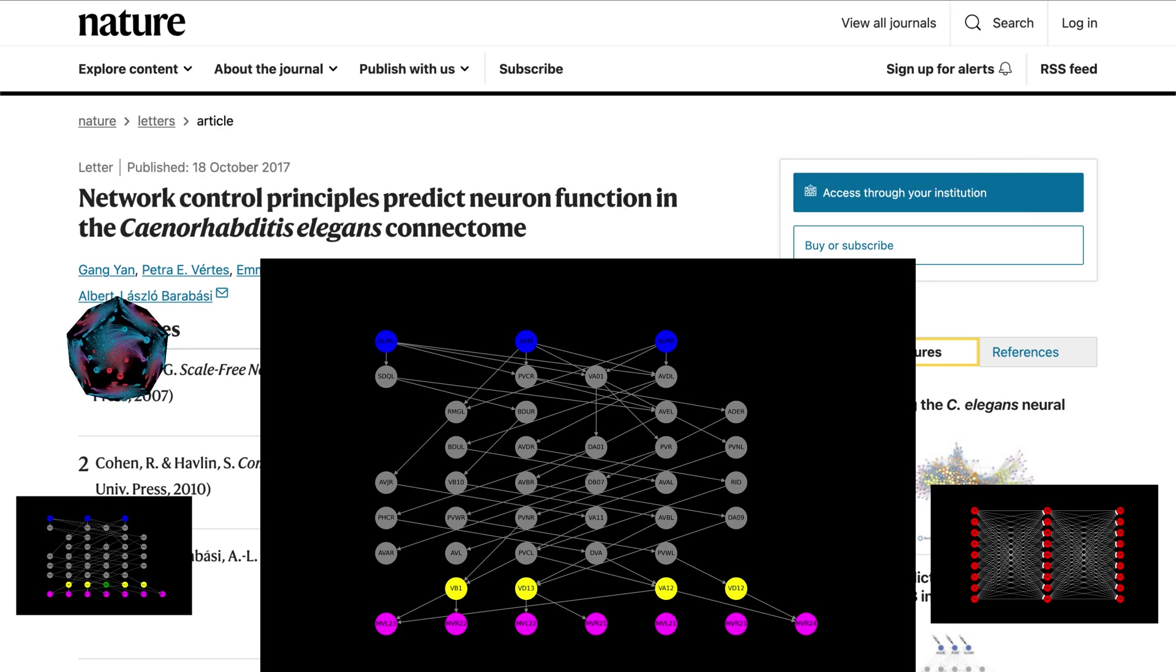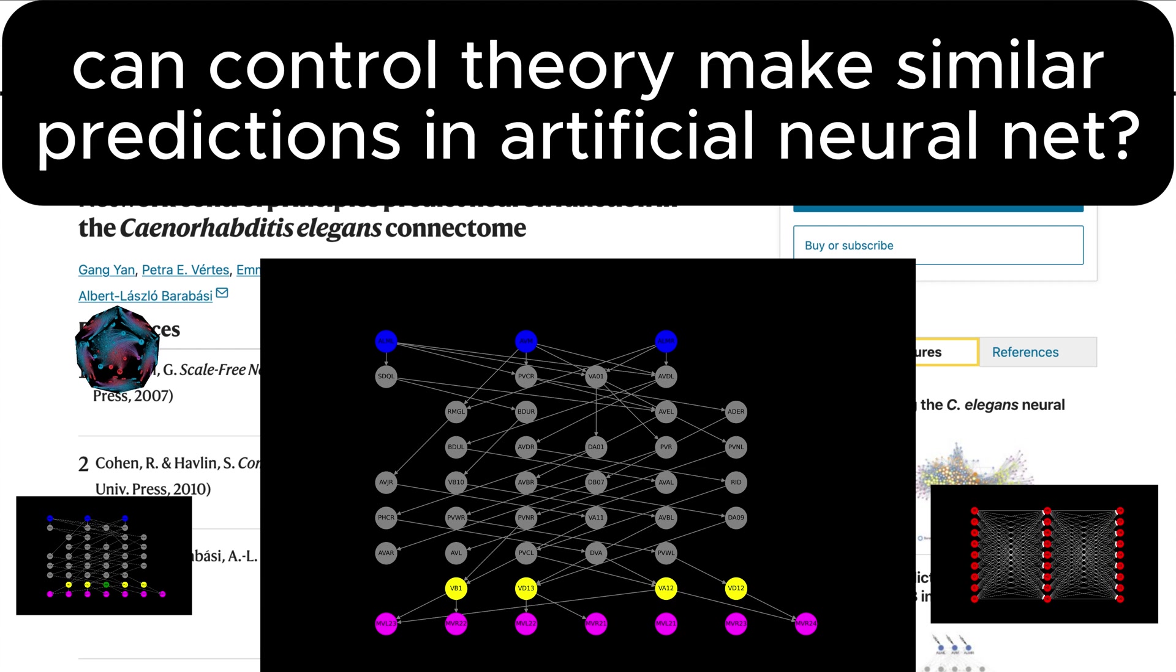But the implications go far beyond C elegans. Control theory could pave the way for revolutionary advances in artificial neural networks.